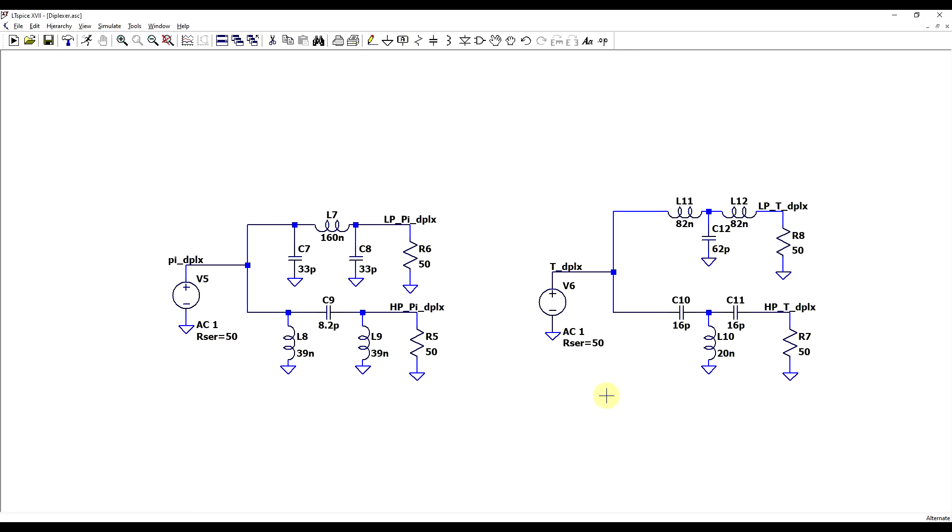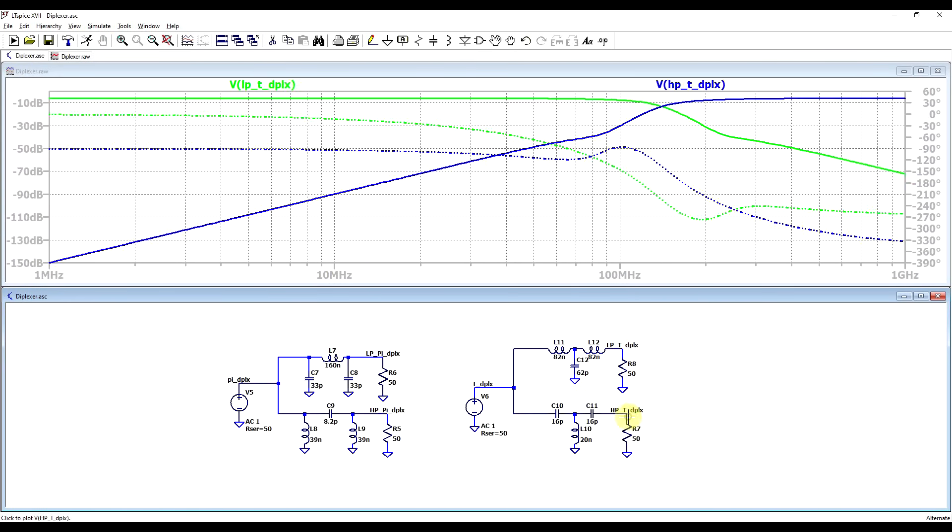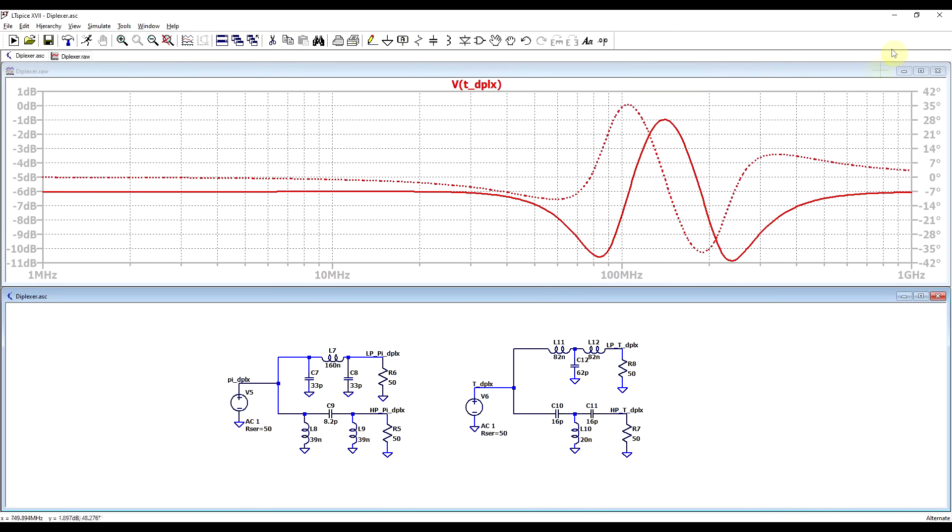If we now put the two sets of filters together to form a diplexer, so once with the pi filters and once with the T filters, if we look at the case of the T filter, so on one branch and the other one, we can see that both outputs present a relatively flat response in their respective frequency ranges. So the high-pass branch above about 200 megahertz and the low-pass branch roughly below 100 megahertz. And if we look to the load side, we have a more or less flat response around the minus 6 decibel point, indicating that the two loads are well matched to the signal source load.